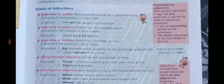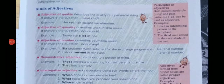Adjective of quality describes the quality of a person or a thing — it tells us a specific quality or characteristic. To identify this type, we use the question 'what kind?' For example: 'Her red hair caught our attention.' Here, 'red' is placed before 'hair' and describes it, making it an adjective of quality.